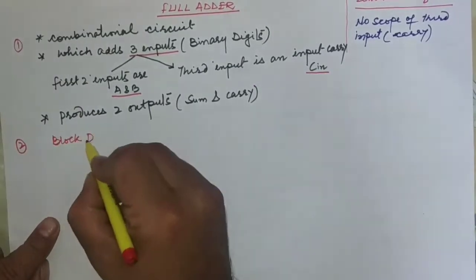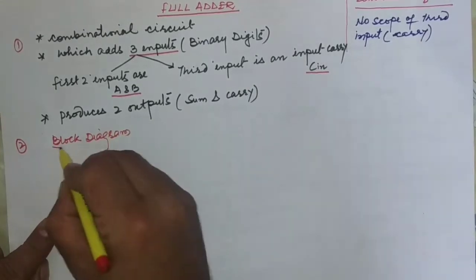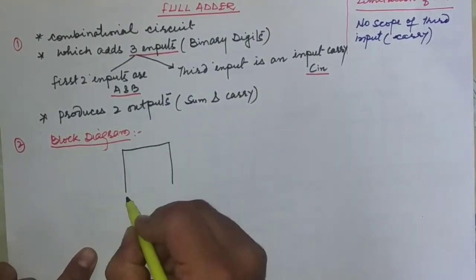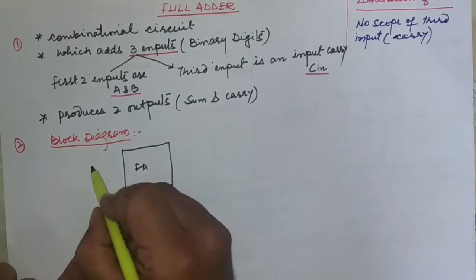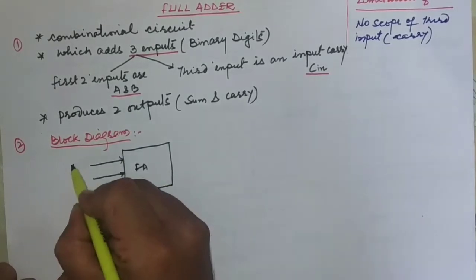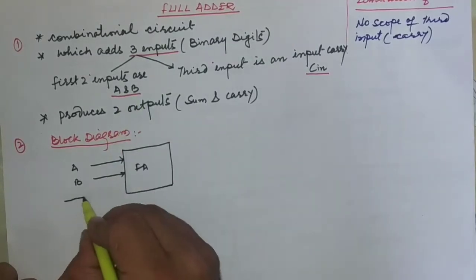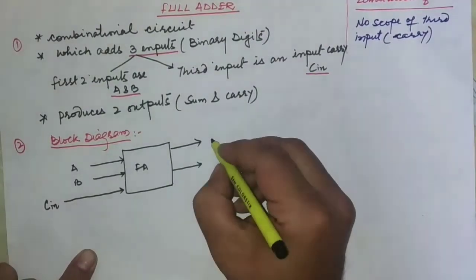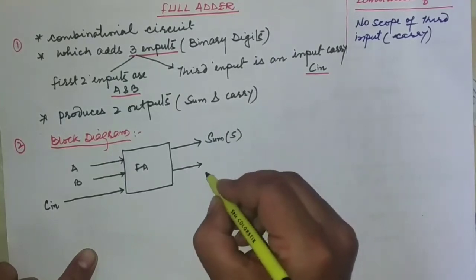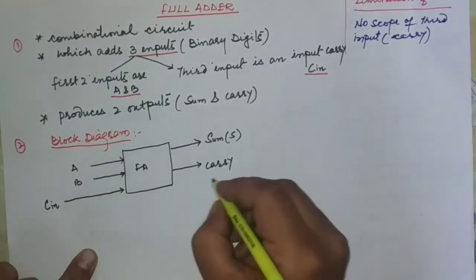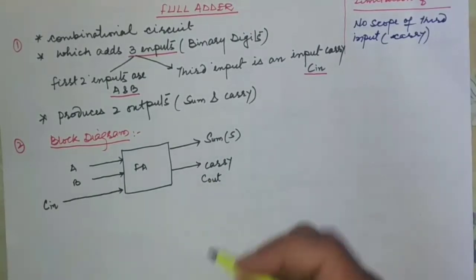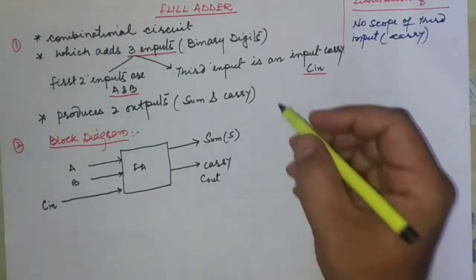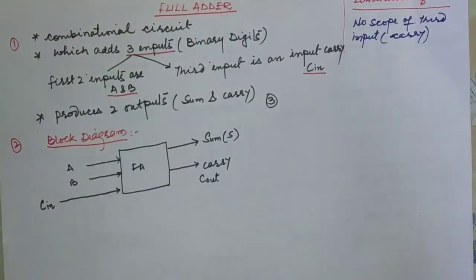The block diagram of the full adder shows three inputs: A, B, and the input carry C_in. There are two outputs: the sum, designated as S, and the output carry, designated as C_out, which is the carry generated by the full adder.